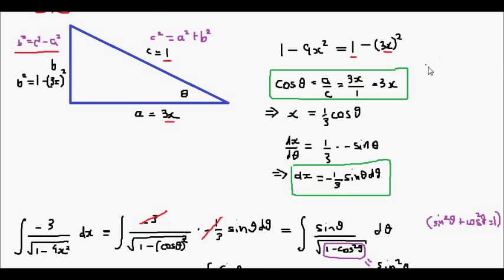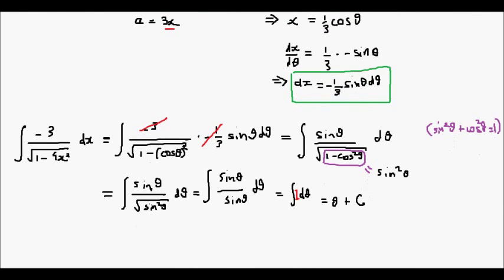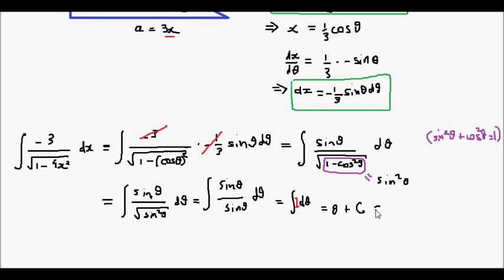Since cos θ equals 3x, it follows that θ equals the inverse cos of 3x, so our final answer is the inverse cos of 3x plus c.